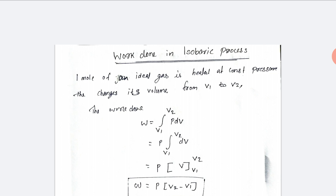We want to change the volume from V1 to V2. We need to change the equation. Work done is equal to the integral from V1 to V2 of P dV.